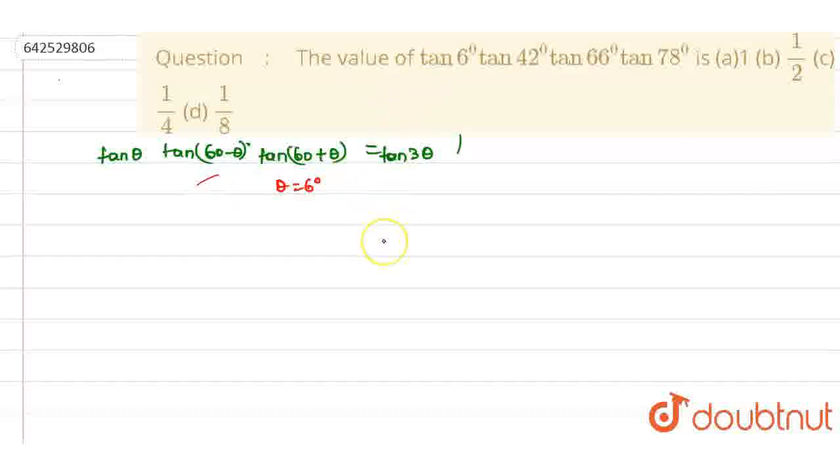So, if I multiply and divide by tan 54°, that is tan 60° times tan(60° - 6°), multiply tan 54° divided by tan 54° into tan 66° into tan 78°.